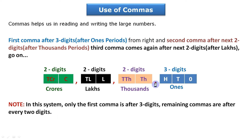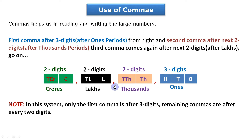After the first comma is the thousands period, after the second comma is the lakhs period, and after the third comma is the crores period. If a large number has three commas, start reading from crores. If it has only two commas, start reading from lakhs. Let us see some examples.